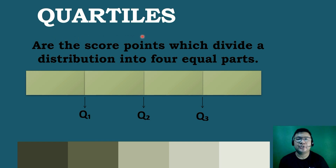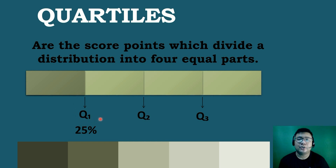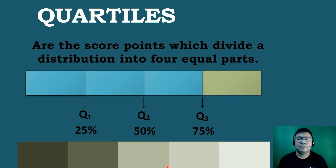So let's recall the definition of quartiles. Quartiles are score points which divide a distribution into 4 equal parts. 25% of the distribution falls below the 1st quartile, while 50% falls below the 2nd quartile, and 75% falls below the 3rd quartile. Using the definition of quartiles, we can interpret the given data.